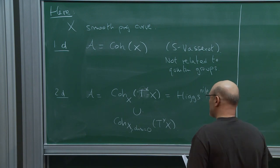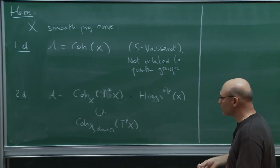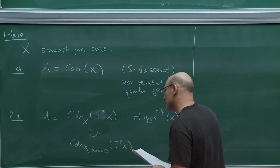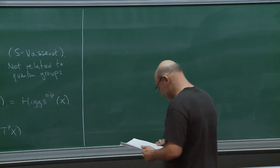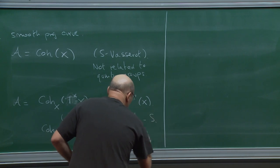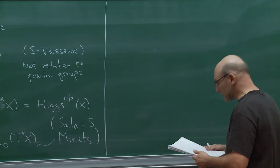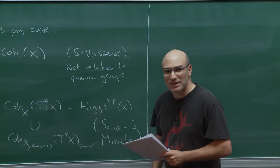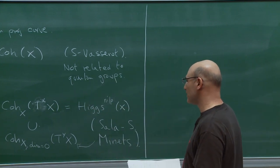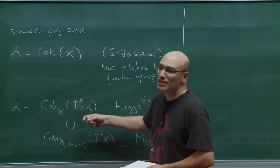Recently, Kapranov and Vasserot also considered coherent sheaves on an arbitrary surface, including two-dimensional coherent sheaves with full support, though it's harder to understand in this context. This is joint work with Francesco Sala, and also work of Minets, especially in this case. Most of my talk will be about the one-dimensional case, because it's related to interesting enumerative geometry on curves. But let me start by saying a little bit about the second case, which in the end should be the most interesting one, though at the moment it's still quite mysterious.